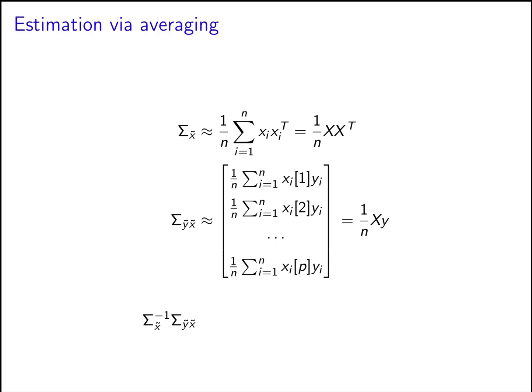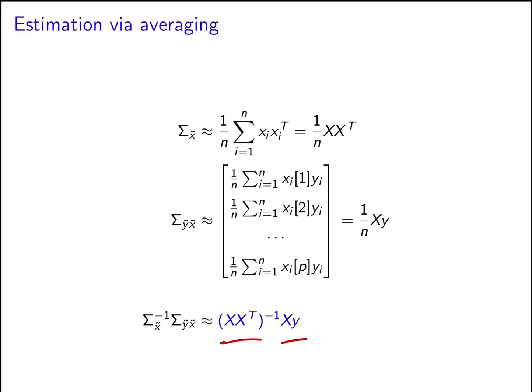So now our best possible vector of coefficients, according to this mean squared error theory, is equal to — when we plug this in — the inverse of XX^T times Xy. This is a reasonable estimate for the vector of linear coefficients that allows you to fit a linear model.